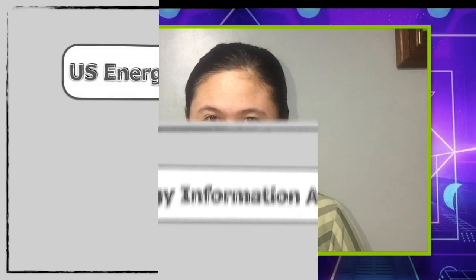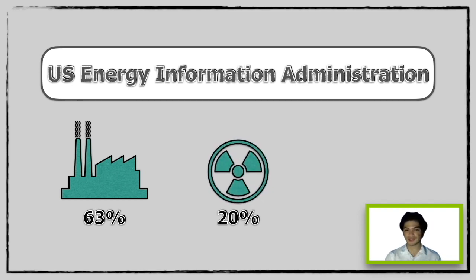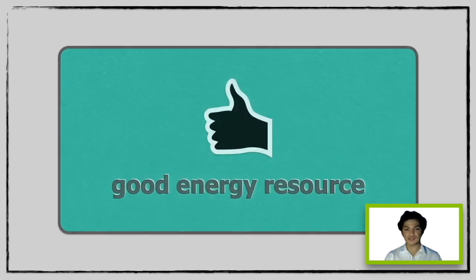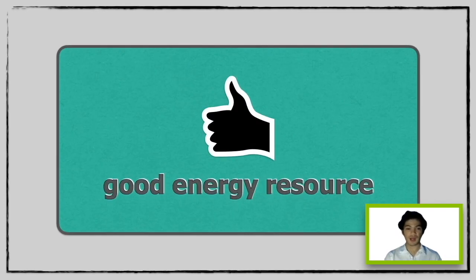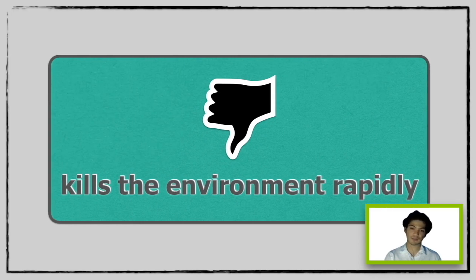The answer is there is approximately 63% of energy generated from fossil fuels just last year. On the other hand, only 20% of generated energy accounts from nuclear energy, and the other 18% are from renewable resources. Honestly, fossil fuels are good energy sources. However, the downside for fossil fuels is that it kills the environment rapidly.